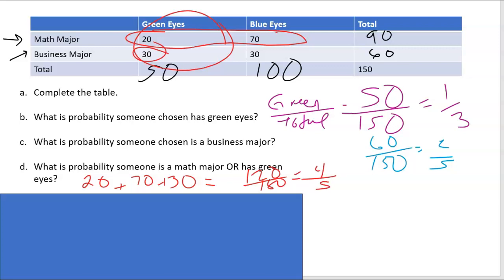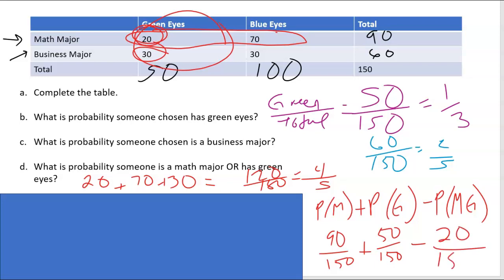The other way is to say we would do the probability of math majors plus the probability of green eyed people minus the probability of those that are math and green eyed. So math would give us 90 over 150, green gives us 50 over 150, and then we subtract the overlap because we counted that 20 twice. And if you do that, you'll notice that 90 plus 50 minus 20 leads us back to the 120 over 150, which equals four fifths.